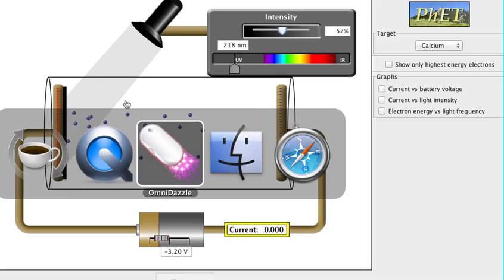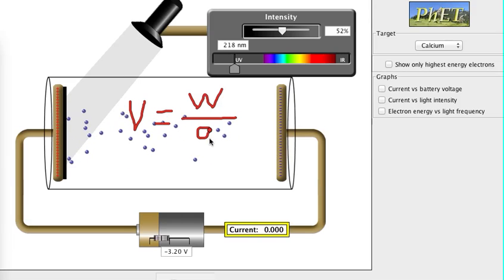Once we have the current down at zero, we can find the energy of these electrons by using the formula. Voltage, that's the voltage of our voltage source, is equal to the kinetic energy of the electrons, which comes from the formula voltage equals work over charge. Again, the work is the kinetic energy of the electrons, the Q is the charge of the electrons, and V is the voltage required to stop the electrons. We know we stop the electrons when the current gets down to zero.